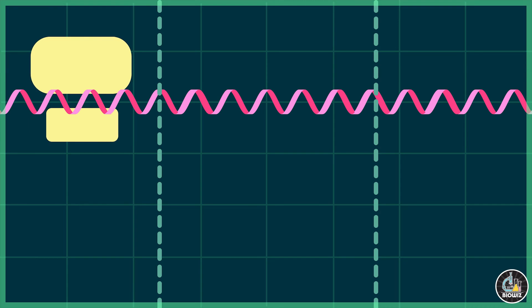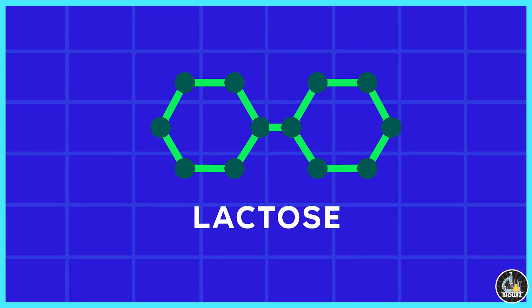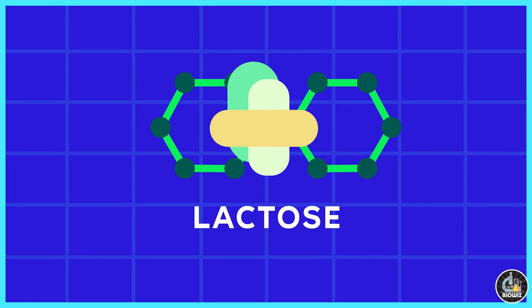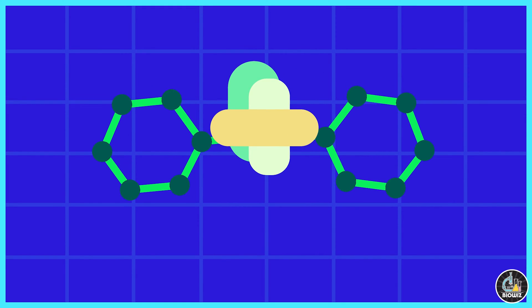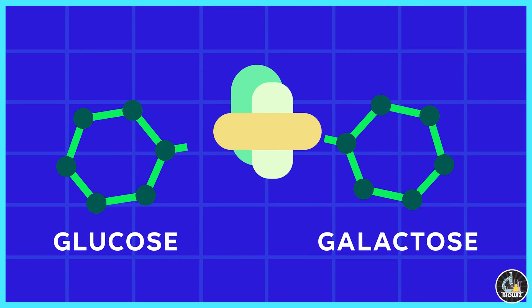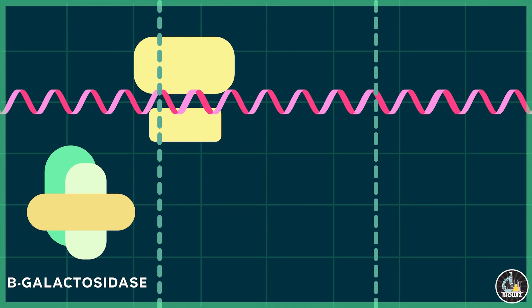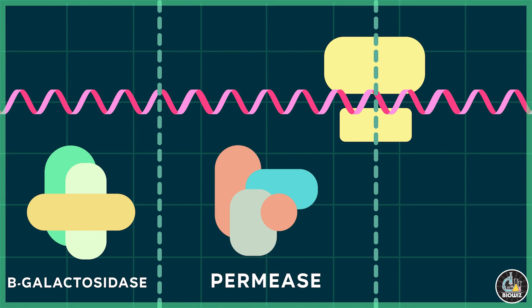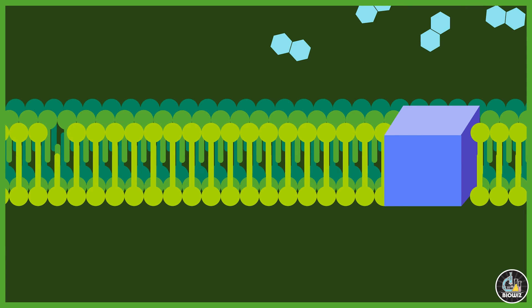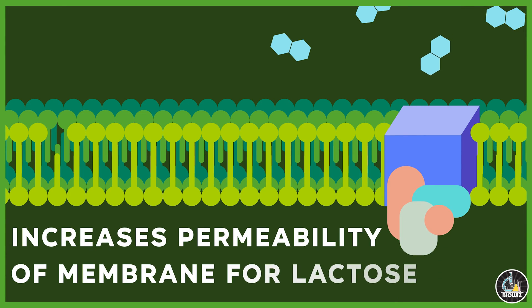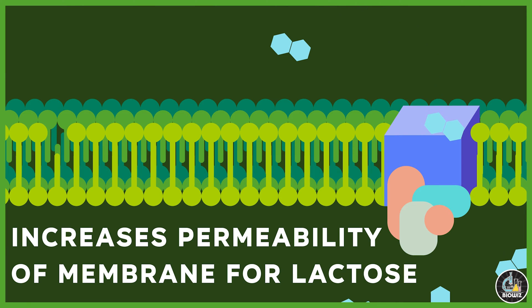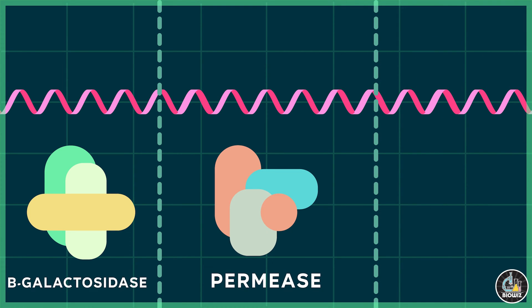The information from the lacZ gene forms the enzyme beta-galactosidase, which breaks the glycosidic bond of beta-galactosides like lactose into its units — glucose and galactose. The lacY gene codes for the enzyme permease, which increases the permeability of the membrane for lactose to allow more lactose molecules to enter the cell. And the lacA gene codes for the enzyme transacetylase, which transfers an acetyl group from acetyl coenzyme A to beta-galactosides.